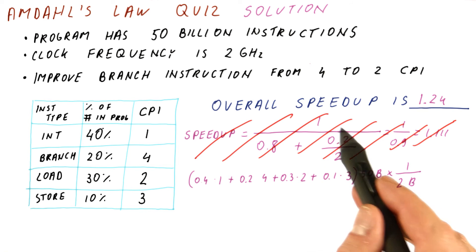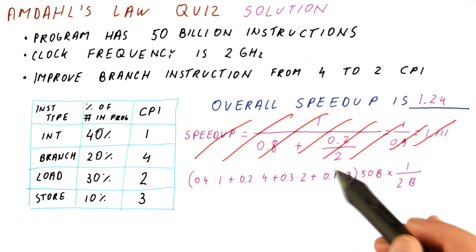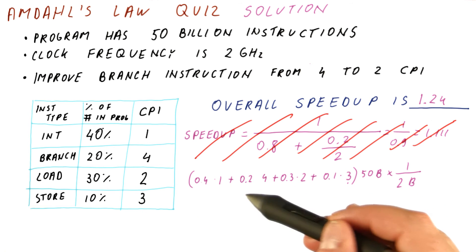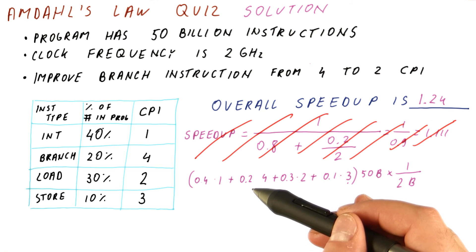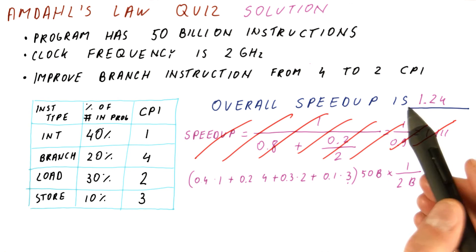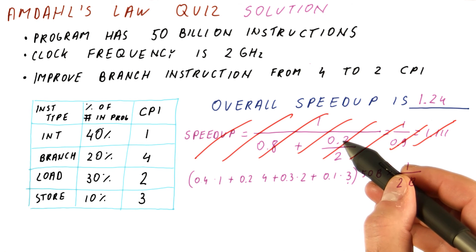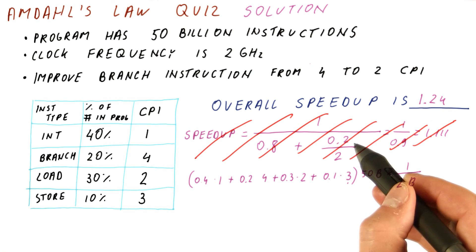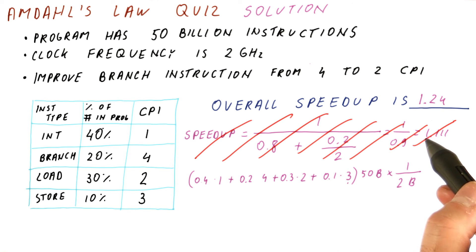In order to be able to use Amdahl's law, what we have to figure out is, of this execution time, what fraction were the branches? And if we did that, we would be able to plug that number here and here as the fraction enhanced and get the correct answer here. So again, do not use something other than the fraction of execution time as your fraction enhanced, because you will not get the correct answer.